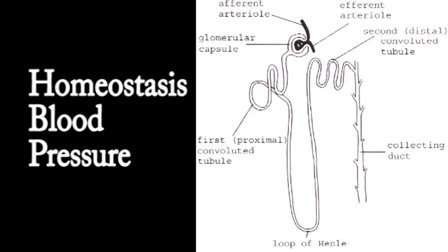High blood pressure can also lead to a thickening of the wall of the heart — the myocardium becomes thicker, it hypertrophies, causing left ventricular hypertrophy, and over time that will lead to congestive cardiac failure. High blood pressure can also damage the kidneys and damage the retina of the eye, so high blood pressure can damage many tissues.